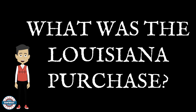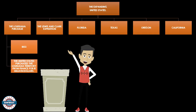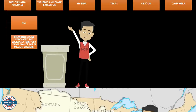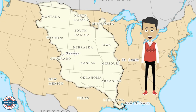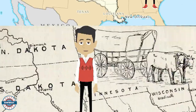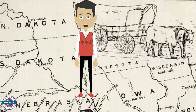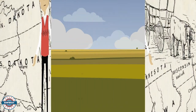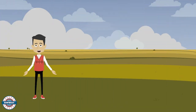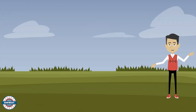What was the Louisiana Purchase? In 1803, the United States purchased the Louisiana Territory from France for $15 million. The Louisiana Purchase opened the door to westward expansion during the 1800s, when the U.S. gained and settled land all across the American West.